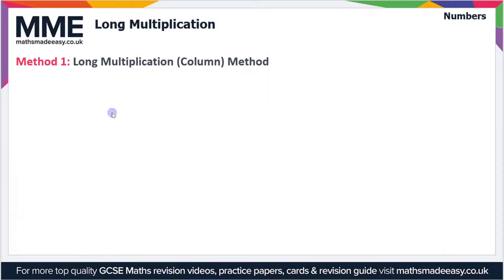Welcome to the Maths Made Easy tutorial on long multiplication. There are two methods of doing long multiplication. The first method we'll look at is the column method, and we'll use an example of 281 times 23 to go through the column method.